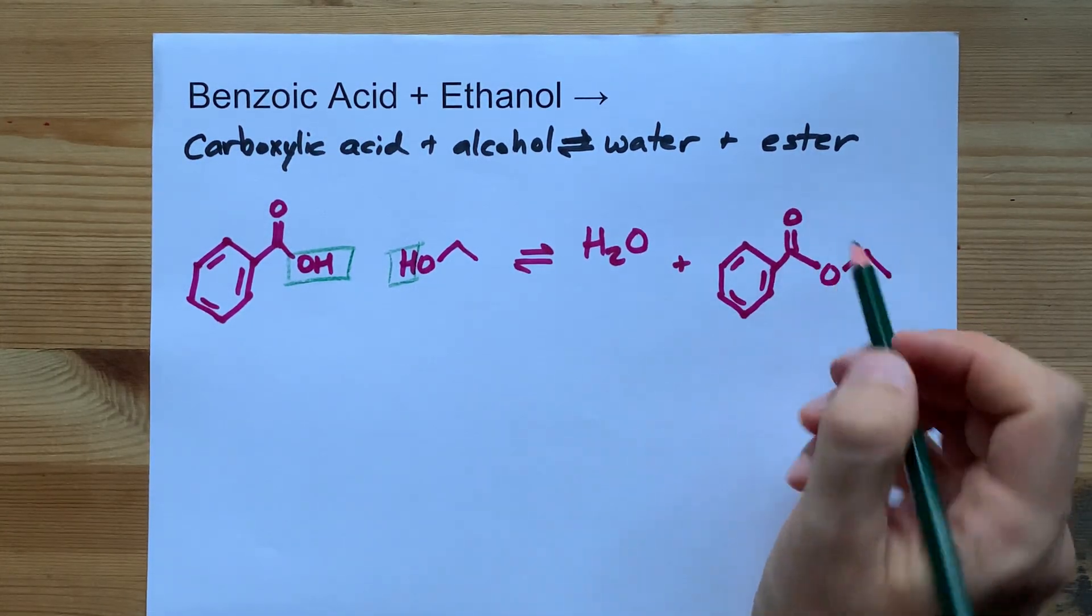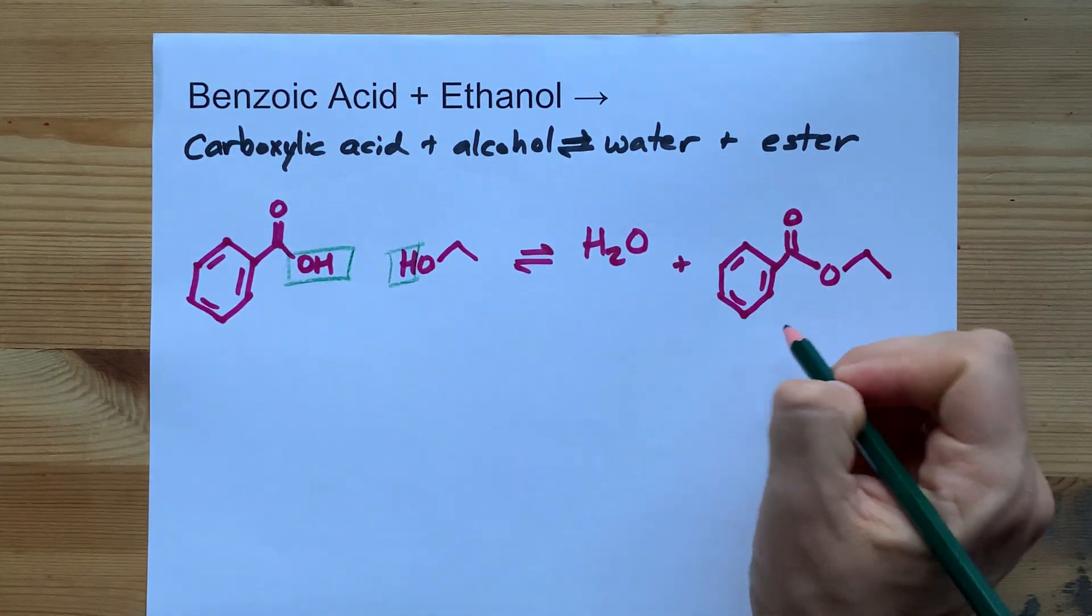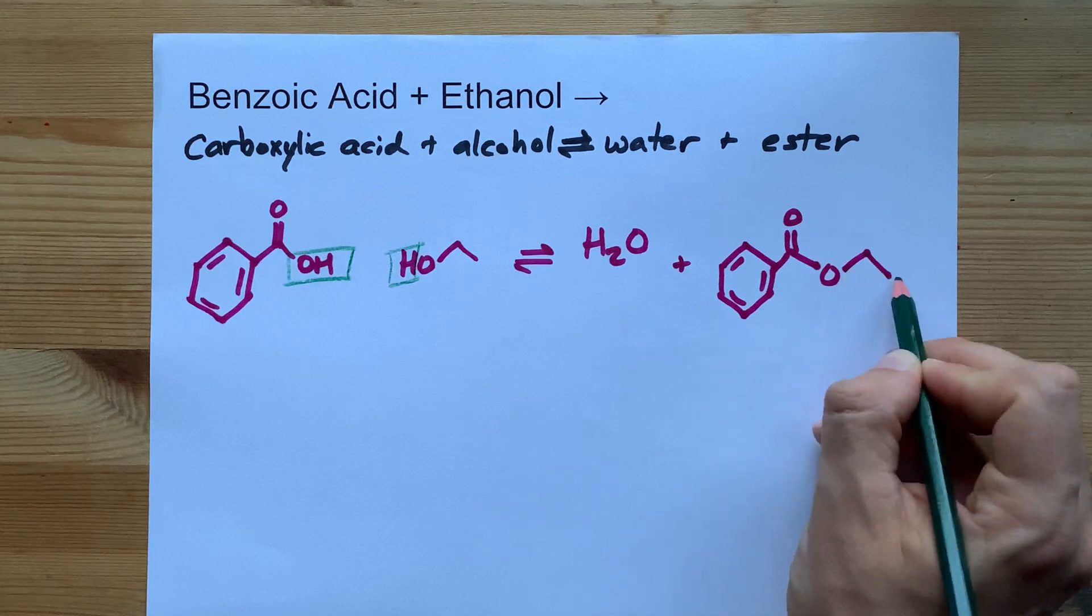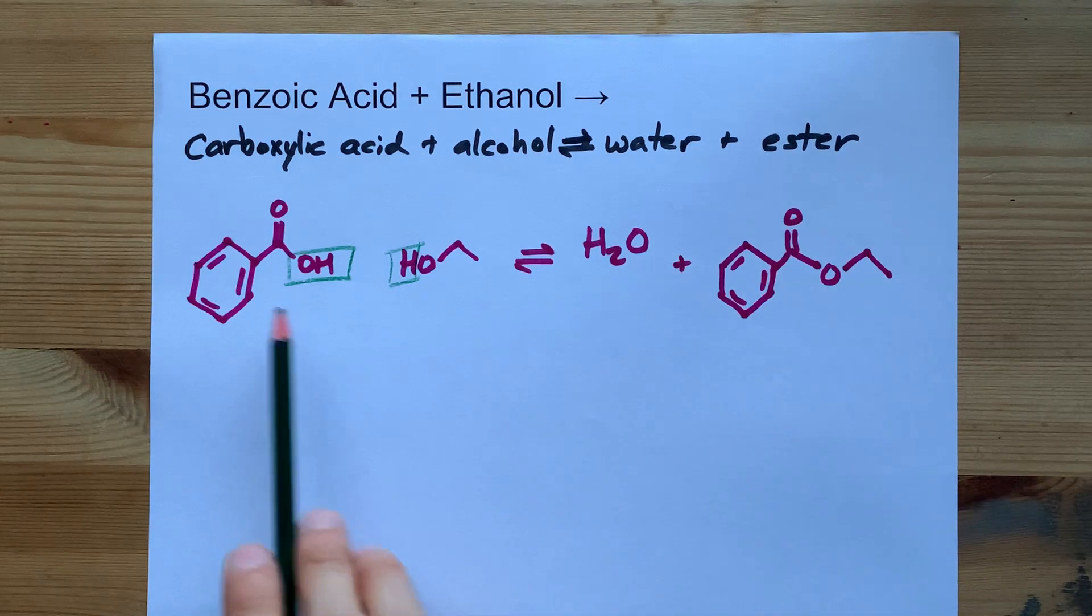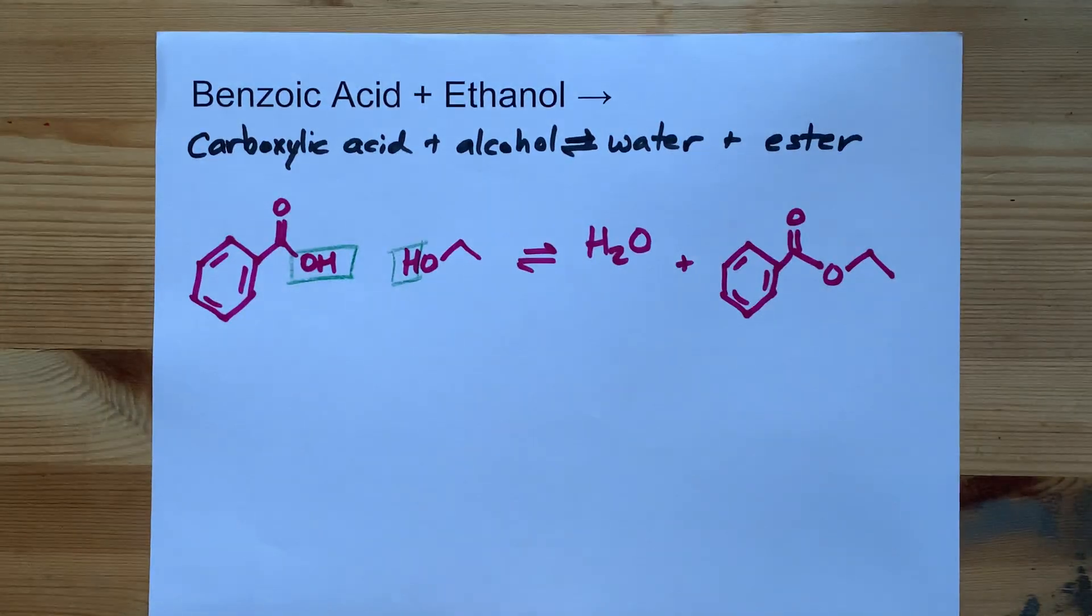Now, the fact that this is an ester comes from the fact that you've got a double bonded O and a single bonded O with more carbons on the other side. I want you to be able to predict the structure of an ester from a carboxylic acid and alcohol.